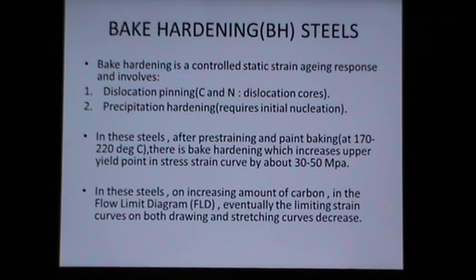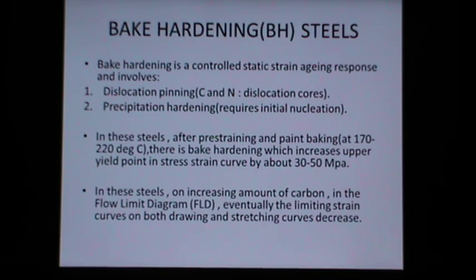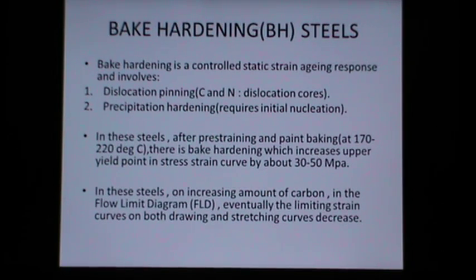The second phenomenon is precipitation hardening. In BH steels, after pre-straining and paint baking at 170 to 220 degrees centigrade, there is bake hardening which increases the upper yield point in the stress-strain curve by about 30 to 50 megapascals.